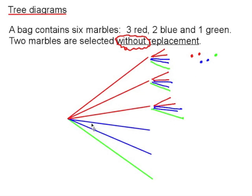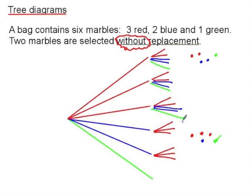But if the first marble taken out is blue, we still have three red marbles in the bag, one more blue and the green. So after each of the blue branches we've got three reds, one blue and one green.